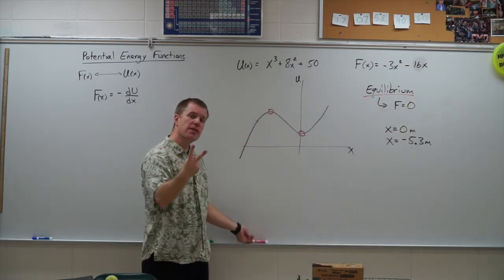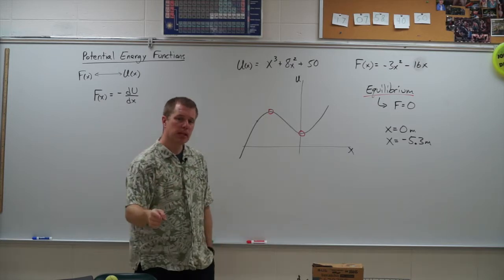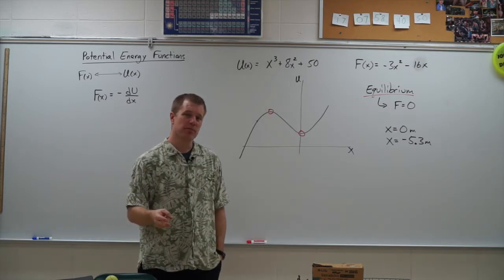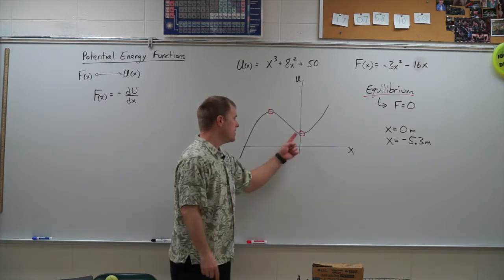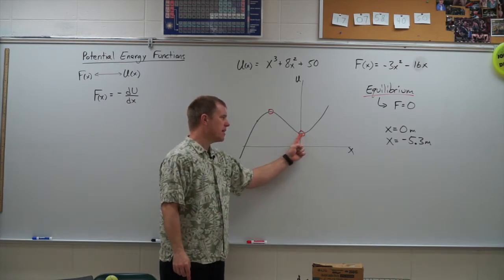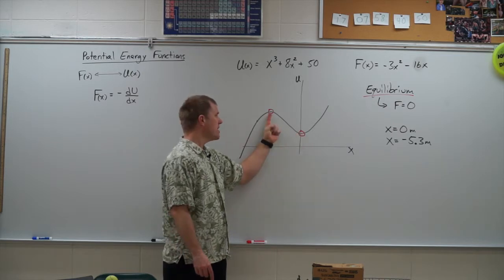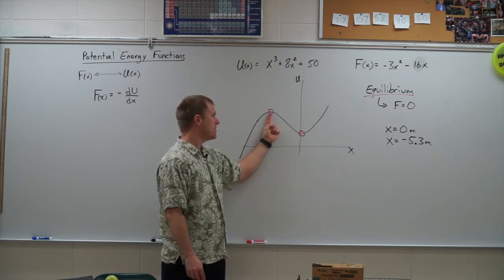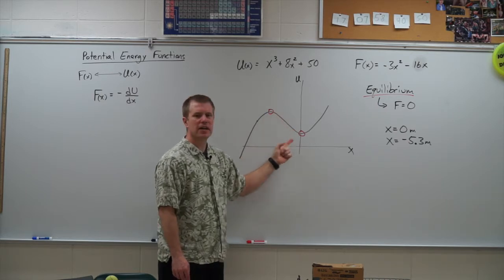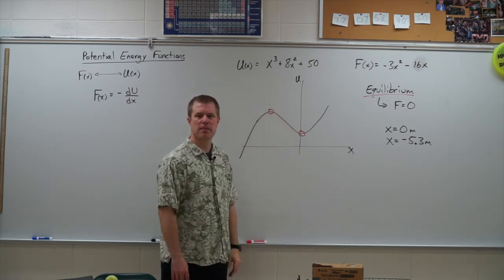Now, there's two types of equilibrium. There is stable equilibrium and there is unstable equilibrium. Stable equilibrium is that idea that if that ball gets bumped down in that valley, it comes back to the bottom. It stays there. Unstable equilibrium is that idea of that ball at the top of the hill. If it gets bumped, it's going to roll down the hill and possibly never come back.